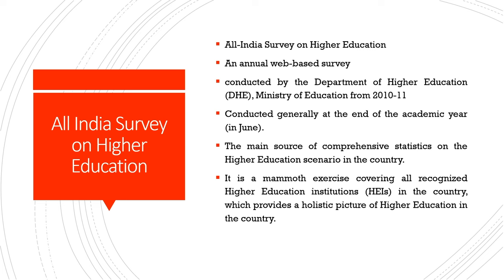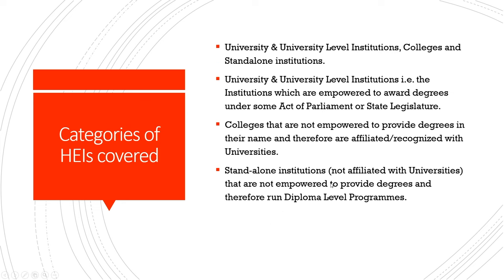Because of the enormity of data available on higher education and the different kinds of institutions that have come up — private sector institutions, public-private institutions, various state-level institutions — today we have a web-based survey providing comprehensive information about higher education institutions. It is conducted generally at the end of the academic year in June and is the main source of comprehensive statistics on higher education in India. Like UDISE+, it is a mammoth exercise covering all recognized higher education institutions in the country.